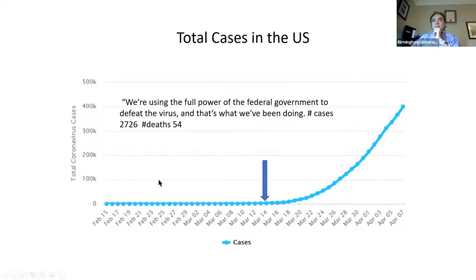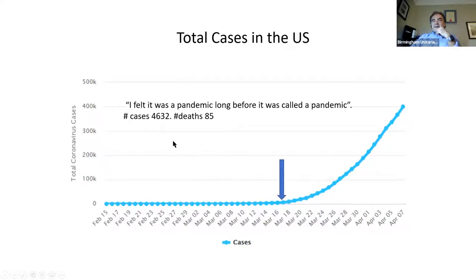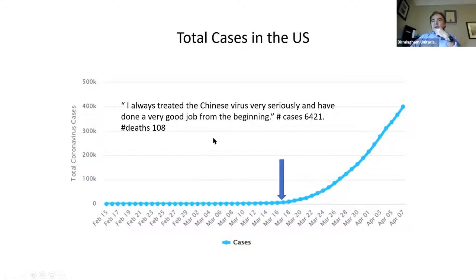Further denial around March 8th, when we had more than 500 cases and more than 20 deaths: 'The fake news media and their partner the Democrat party is doing everything with its semi-considerable power to inflame the coronavirus situation.' Now it's becoming political. Shortly thereafter, around March 10th: 'We're prepared and we're doing a great job with it and it will go away — just stay calm, it'll go away.' At that point we had 600 cases and about 22 deaths. Around mid-March, claims of 'using the full power of the federal government to defeat the virus' while still claiming we'd been doing something all along. After 2,700 cases and about 54 deaths, still claiming 'tremendous control.' Then: 'I felt that was a pandemic long before it was called a pandemic' and 'I always treated the Chinese virus very seriously and have done a very good job from the beginning' — after 6,400 cases and over 100 deaths.